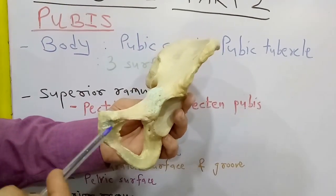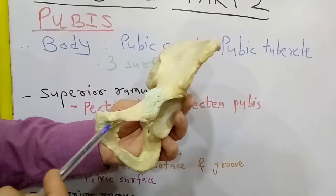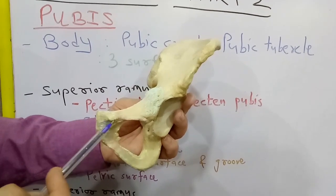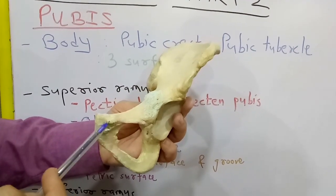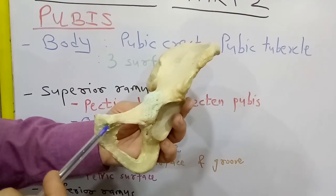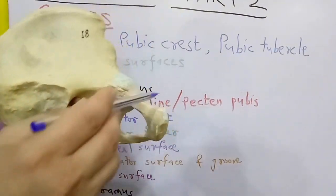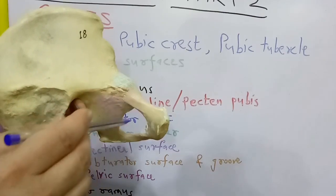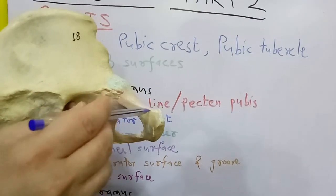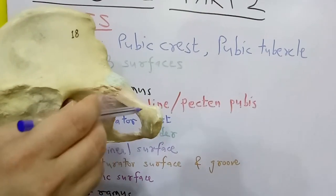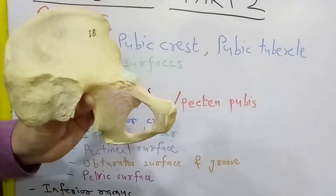The pubic tubercle also gives attachment to some part of the cremaster muscle. The pubic tubercle is crossed by the spermatic cord in males.